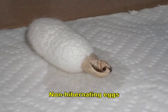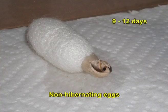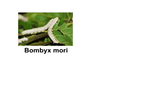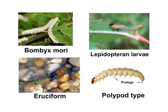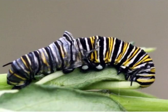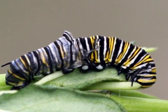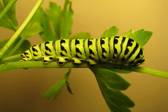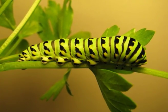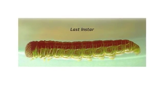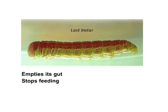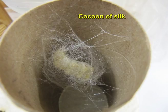Non-hibernating eggs normally complete their embryonic development in 9 to 12 days and hatch out into larvae. The larvae of Bombyx mori, like other lepidopteran larvae, are of eruciform or polypod type with abdominal prologs. The larva molds 3, 4, or 5 times and has 4, 5, and 6 larval instars. Instar means the stage of insect between molds. The final larval instar after full growth empties its gut, stops feeding, and spins the cocoon of silk around it. The last larval instar is 10 centimeters long.